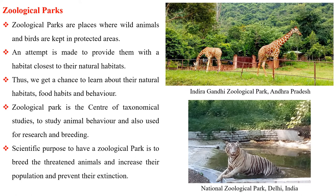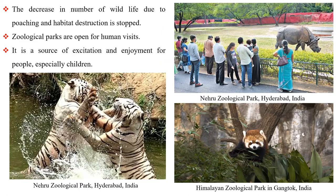Zoological parks are places where wild animals and birds are kept in protected areas. An attempt is made to provide them with a habitat closest to their natural habitats. Thus we get a chance to learn about their natural habitats, food habits and behavior. Zoological parks are centers of taxonomical studies to study animal behavior and are also used for research and breeding. The scientific purpose is to breed threatened animals, increase their population and prevent extinction.